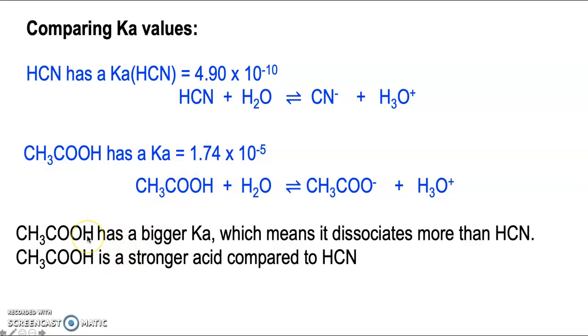So because the ethanoic acid has the bigger Ka, which means it dissociates more, we can say that the ethanoic acid is a stronger acid compared to HCN.